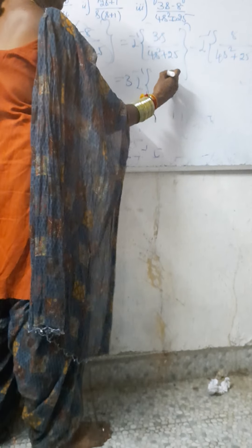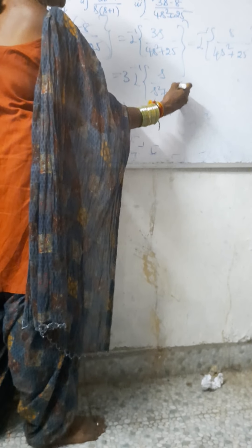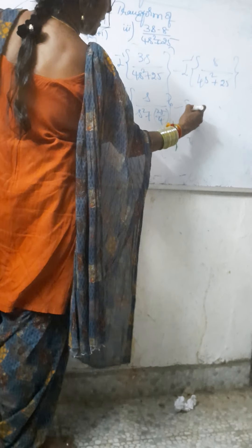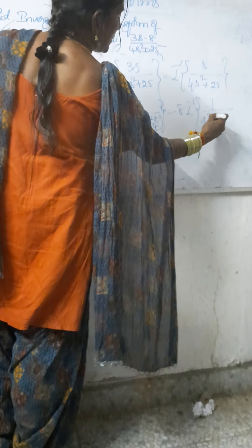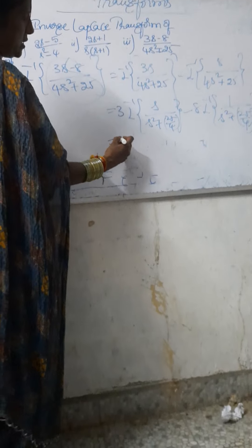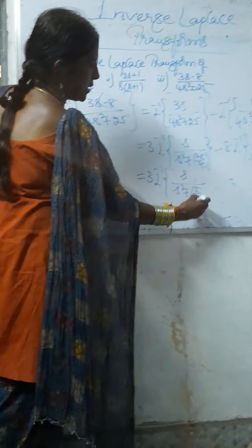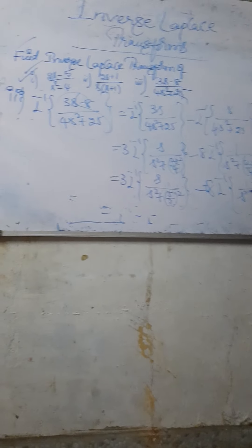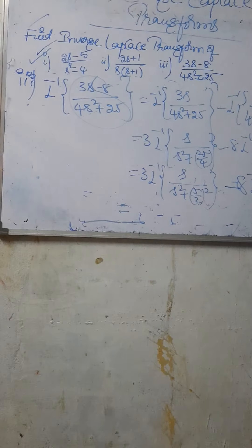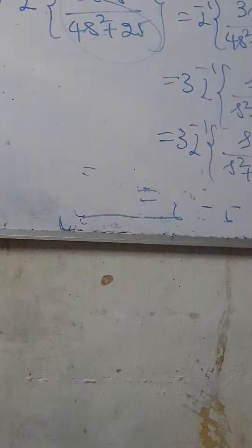We rewrite this as 3 times inverse Laplace Transform of s by (s squared plus 25/4) minus 8 times inverse Laplace Transform of 1 by (s squared plus 25/4). Arranging, 4s squared plus 25 becomes 4 times (s squared plus 25/4), which equals s squared plus (5/2) whole squared. Note that 25 is 5 squared and 4 is 2 squared, so this is (5/2) whole squared. The second term becomes minus 8 times inverse Laplace Transform of 1 by (s squared plus (5/2) whole squared).